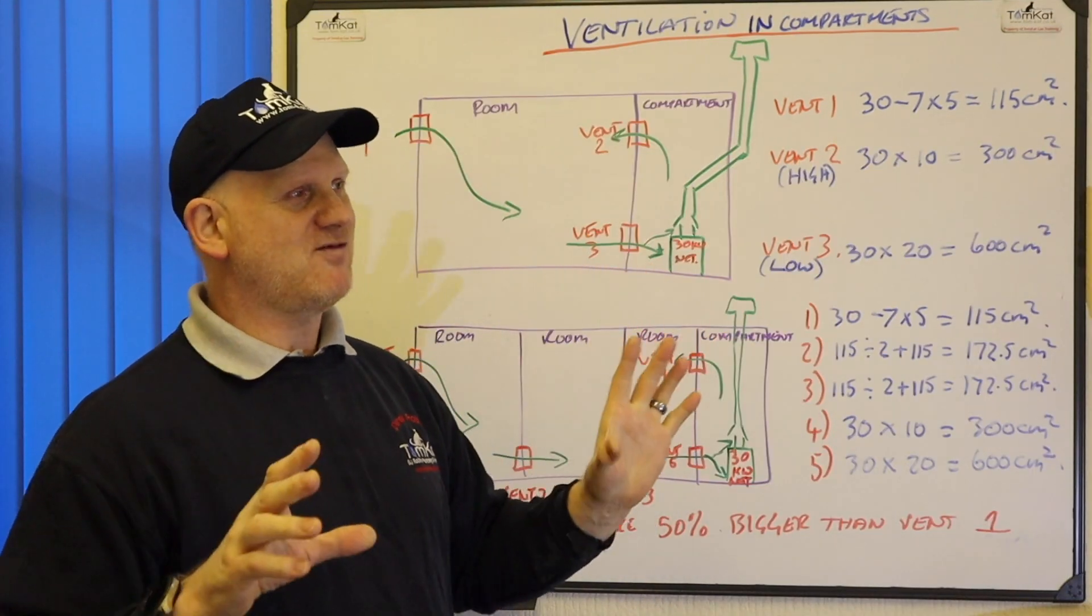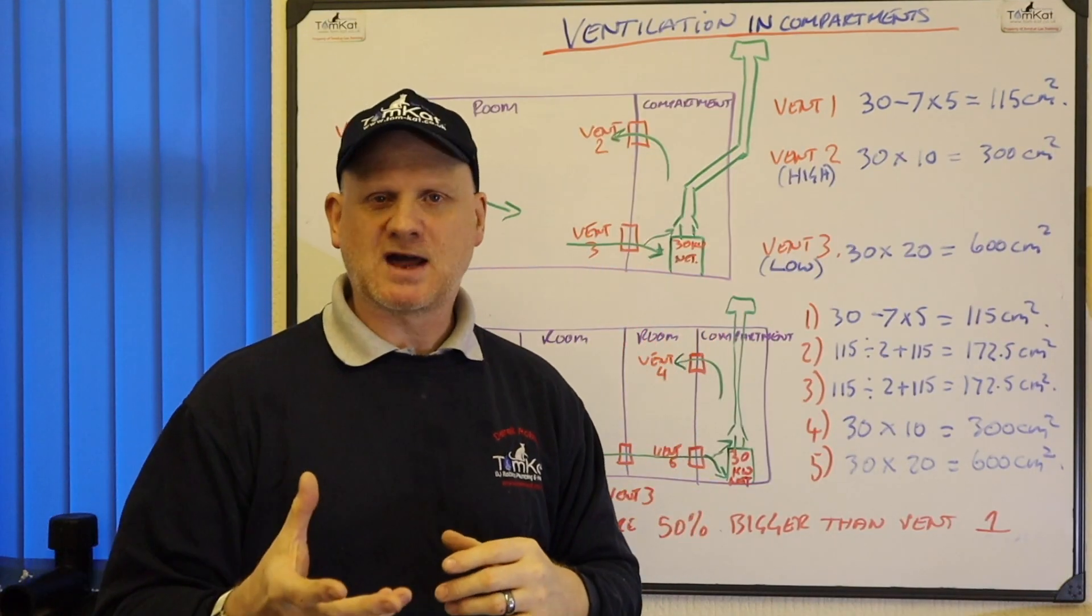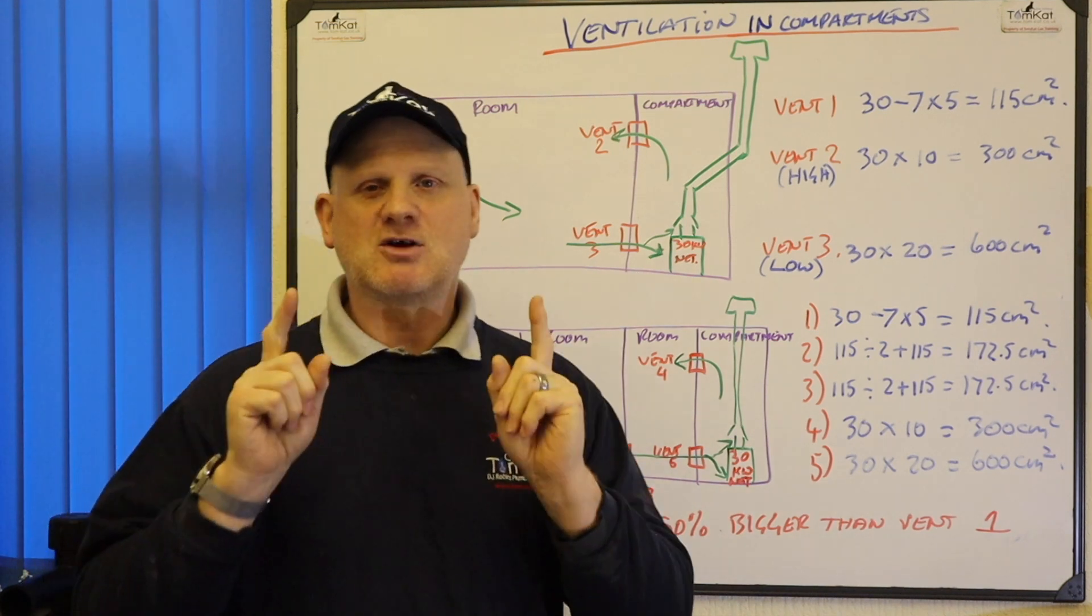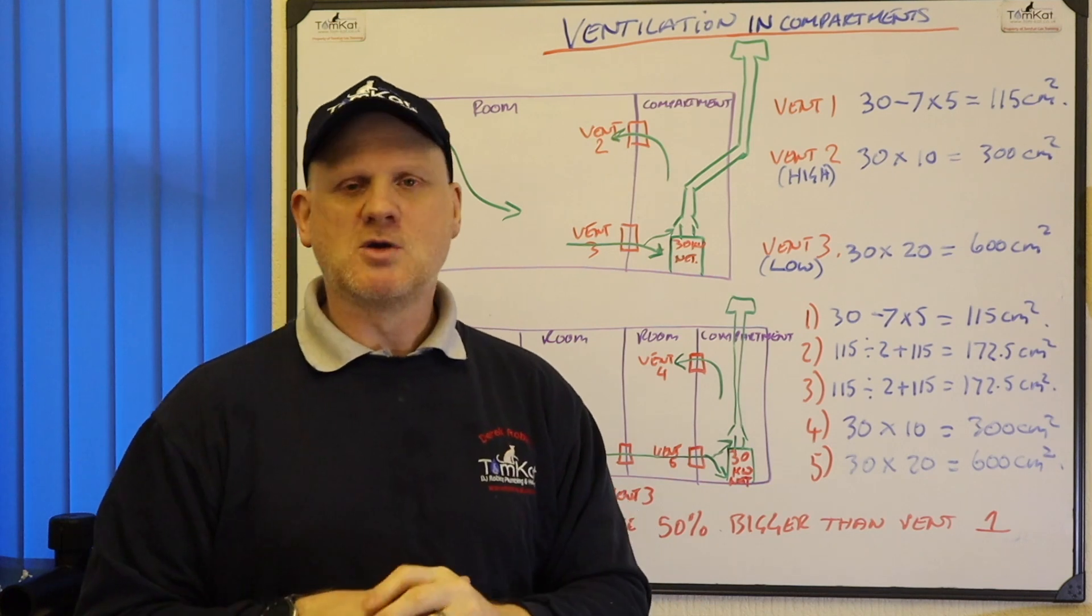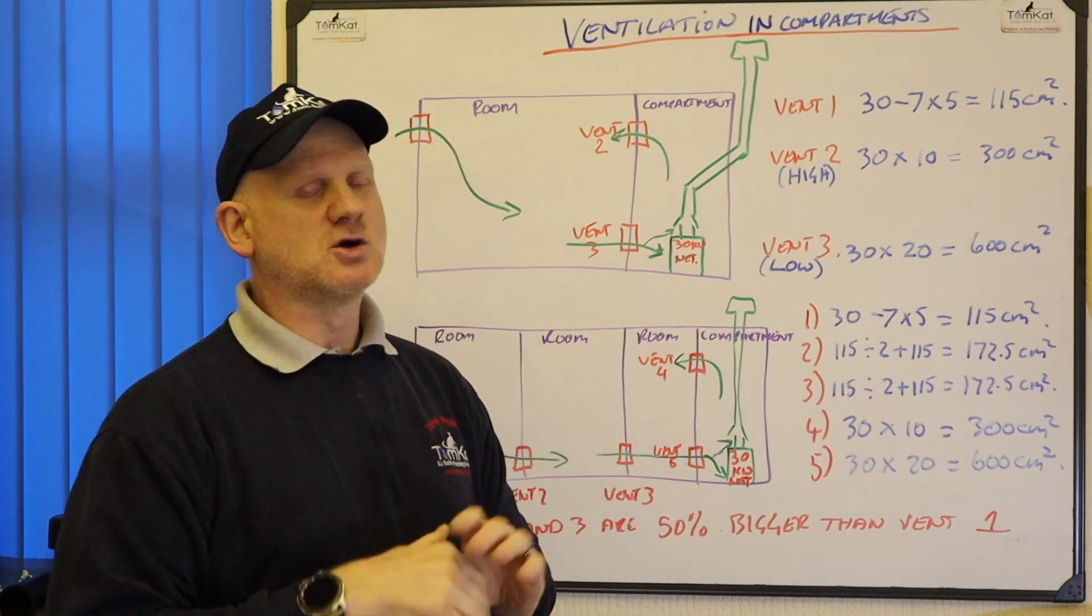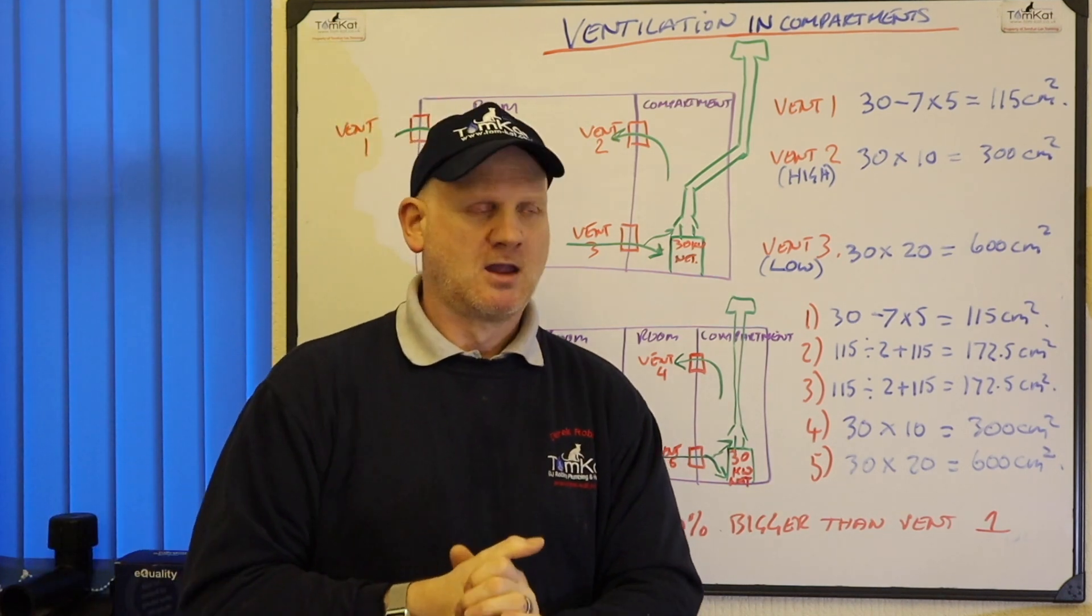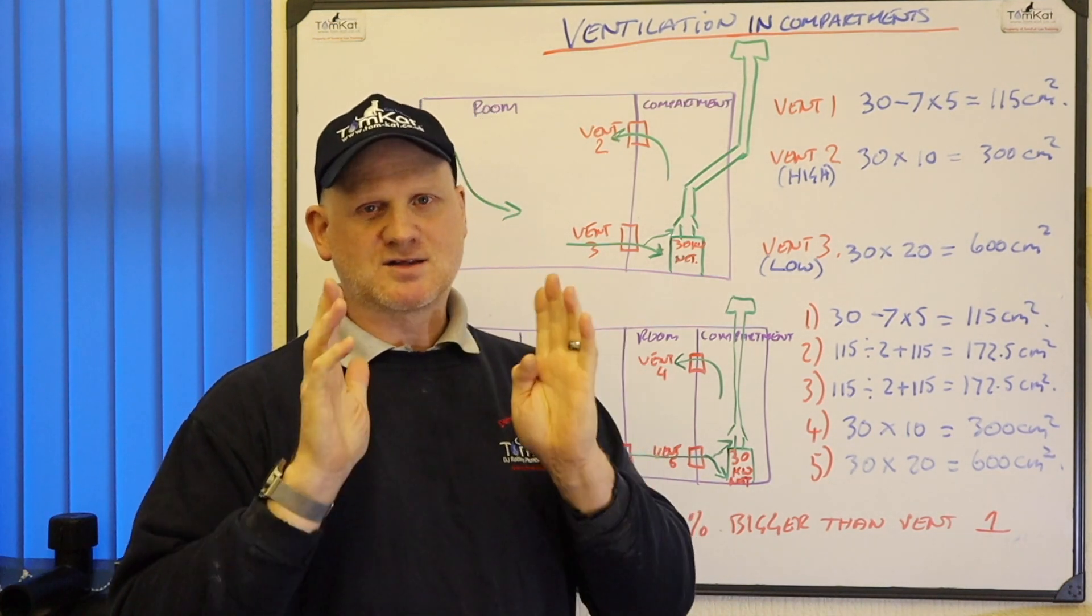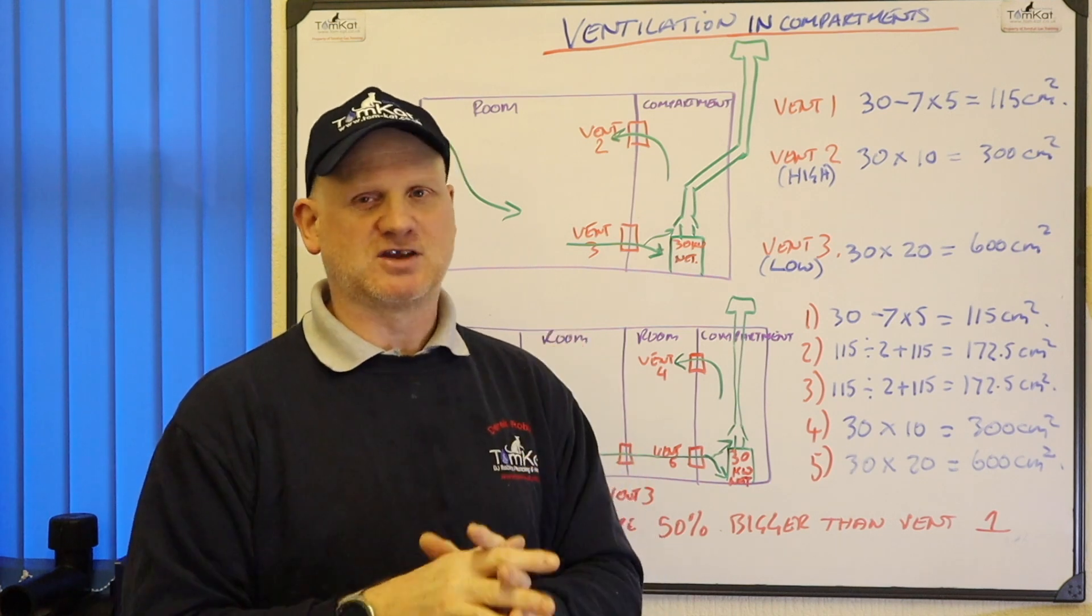Now a couple of things different to open flue appliances being installed in rooms to being installed in a compartment. As you've seen in the first one, if it's installed in a room we are allowed to deduct advantageous air. When the boiler is installed in a compartment you don't minus the advantageous air or the 7kW.